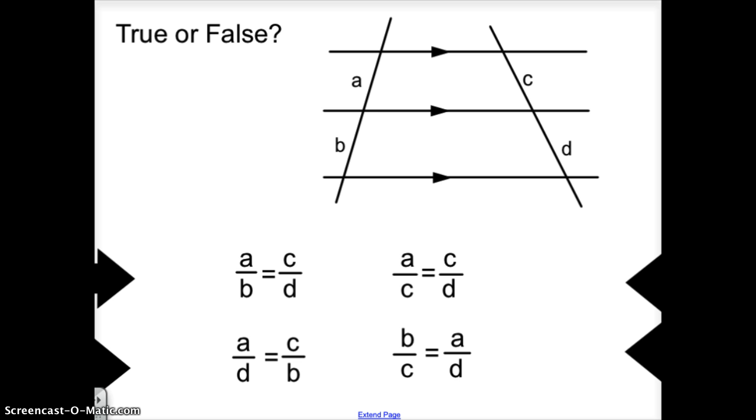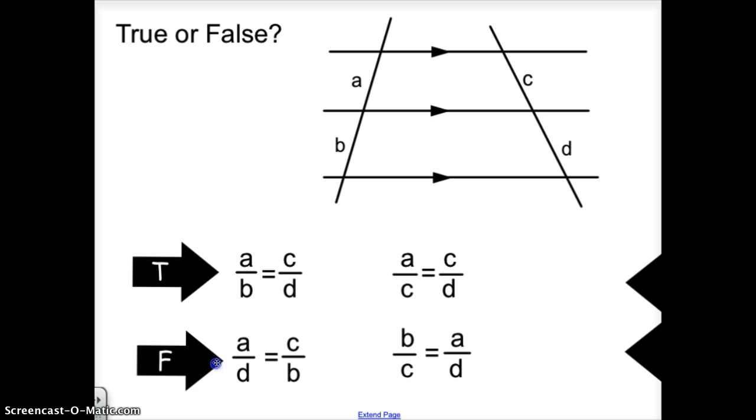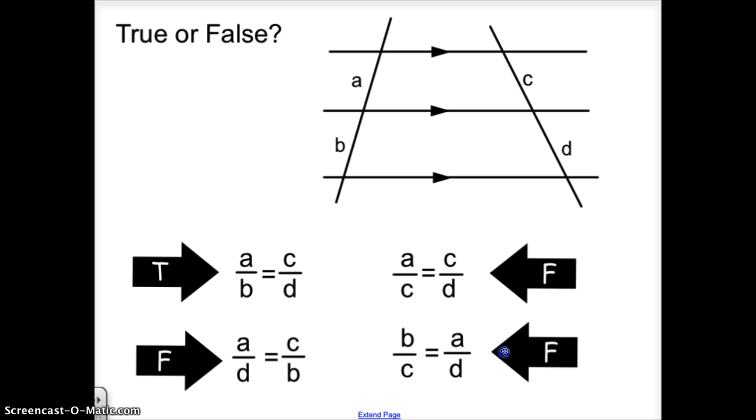Which one is true or false? Is AB congruent or proportional to CD? Yes. Is AD and CB proportional? No. How about AC and CD? No. How about BC to AD? No.